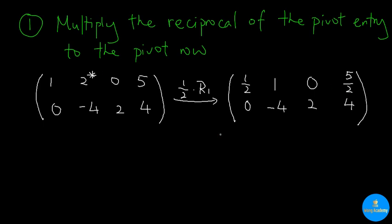This concludes the first step. Notice that by multiplying the reciprocal of the pivot entry to the pivot row, we are guaranteed to turn this pivot entry into a one, which is part of our objective.